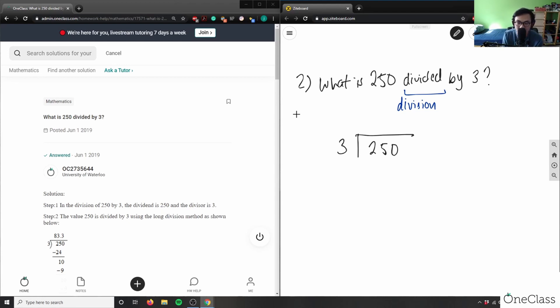How do we do long division? 3 times what number is closest to 25 without going over? 3 times 8 is 24 - I can't do 3 times 9 because that's 27 which goes over. I would do 3 times 8 here, multiply 8 times 3 equals 24, then take the difference. Subtract 25 by 24 and get 1. Bring down the 0 and repeat the process.